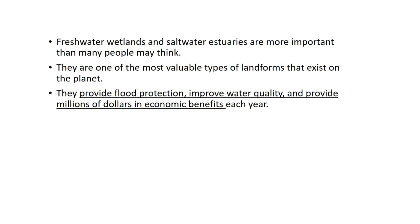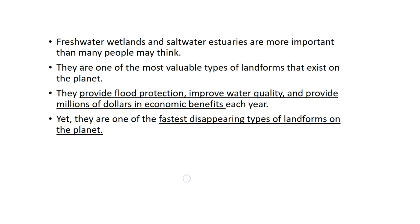They provide flood protection, they improve water quality, and they provide millions of dollars in economic benefits every year. Yet they are one of the fastest disappearing types of landforms on the planet. Part of the reason for that is it's not directly evident to most people just how important these land resources from our wetlands are. They're drained to build Walmart or something like that.